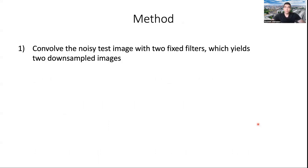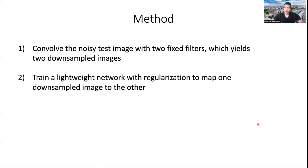So our method is very simple. The first step is to convolve the noisy image with two fixed filters, which will yield two downsampled images. Next step is to train a lightweight network with regularization to map one downsampled image to the other. So the first element is the downsampling scheme. We want it to be very fast. And then we have the loss function and the lightweight network. We need to design them in such a way that would not overfit since we're only training on one image. And the network, for example, needs to be very small so that it's fast and also does not overfit.